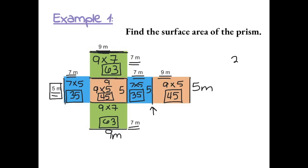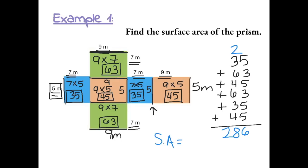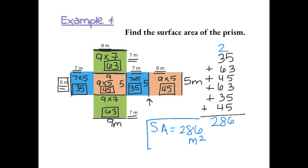We have 35 plus 63 plus 45 plus 63 plus 35 plus 45. Adding the ones: 5, 10, 15, 20, then 23 and 26. Then the tens: 6 and 4 gives 10, another 6 and 4 gives another 10, so 20 plus 3 more is 23. Our total surface area is 286 meters squared. Remember that area is always units squared.